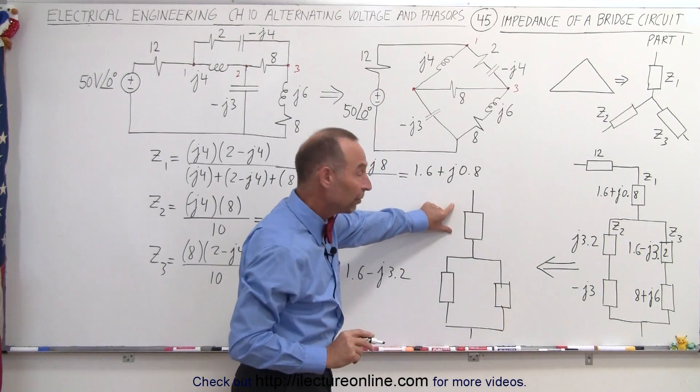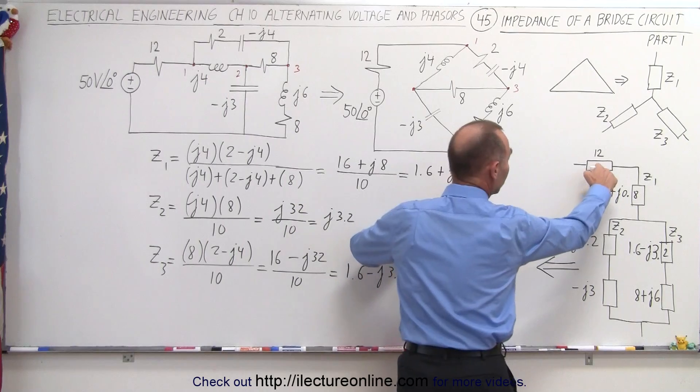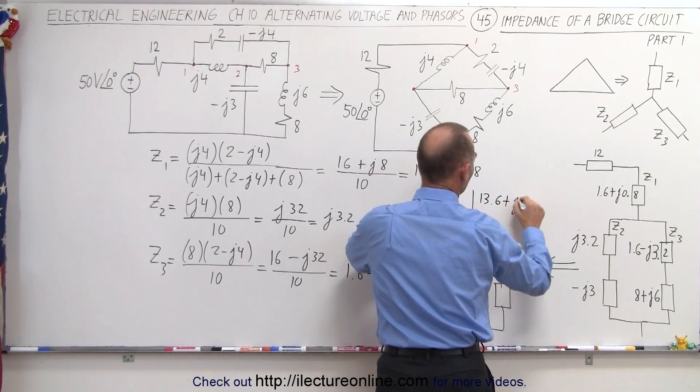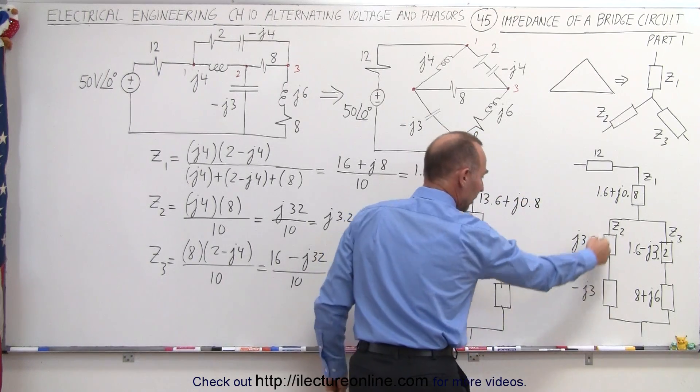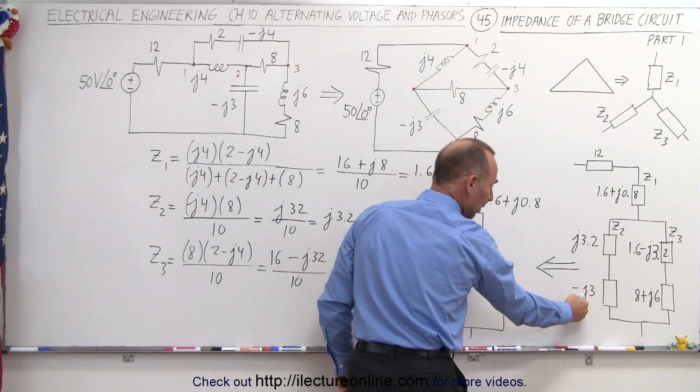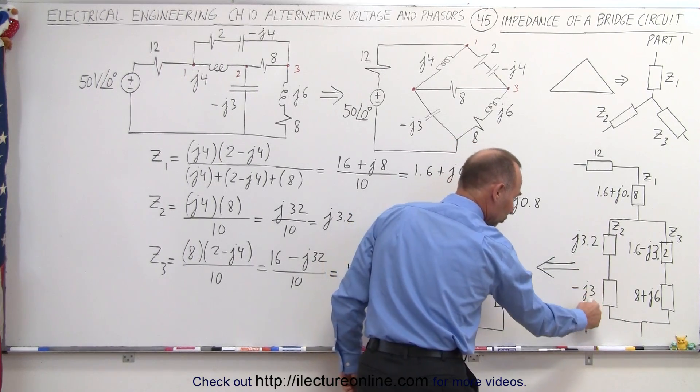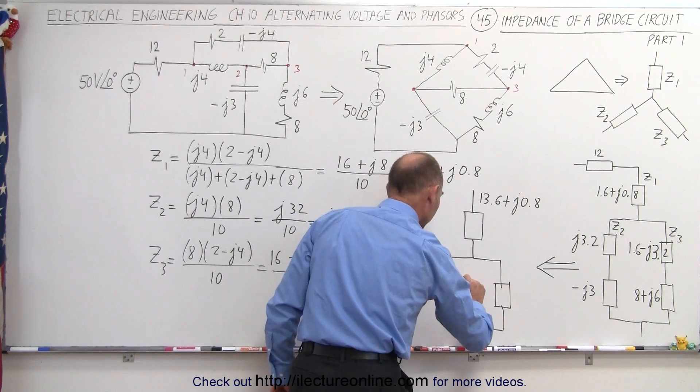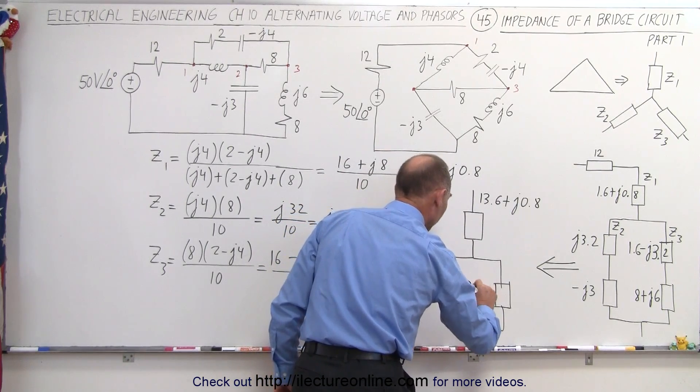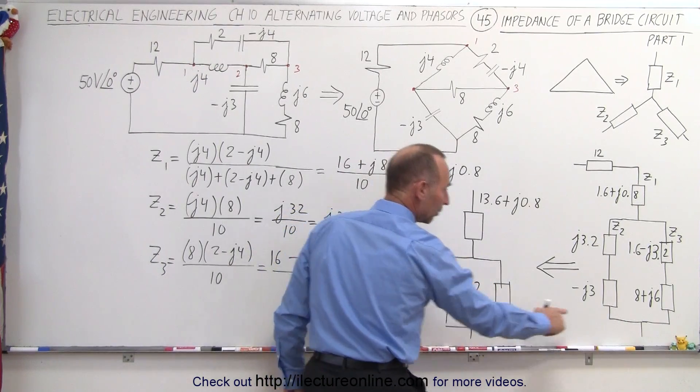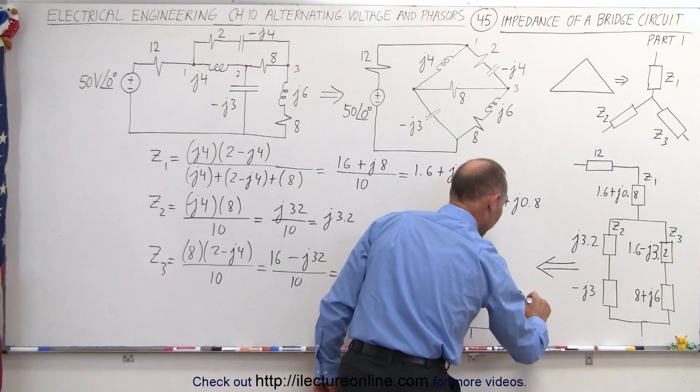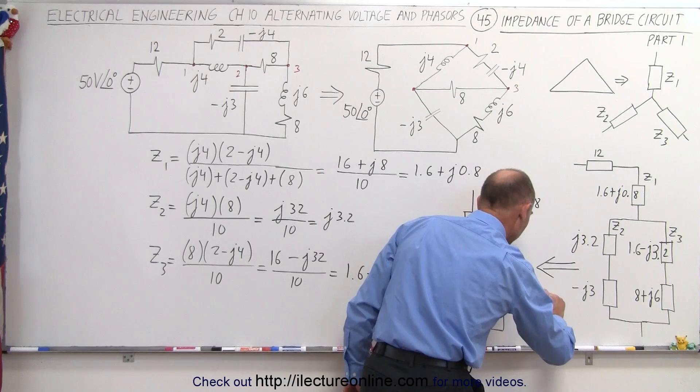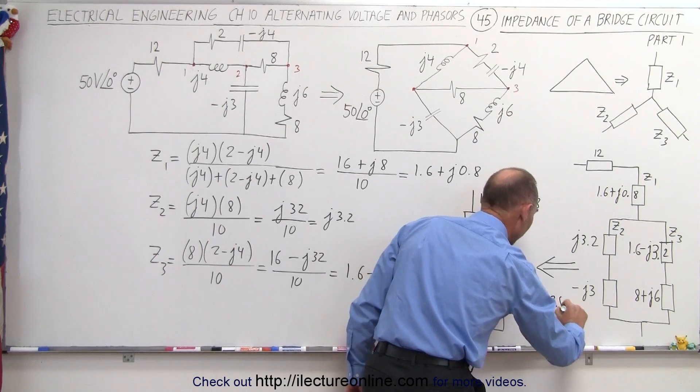Like this. For the top impedance right here, when we combine these two, 12 plus 1.6 gives us 13.6 plus J0.8. And then when we combine these two together, there's no real part, only imaginary part. So this plus 3.2 minus 3 gives us a plus, let's see, where do I put that? How about right here. So that would be a J0.2 for the left branch. And for the right branch, when we add these two together, we have a 9.6. That's 8 plus 1.6. And we combine the imaginary part. That would be plus J2.8.